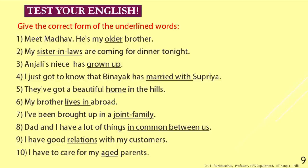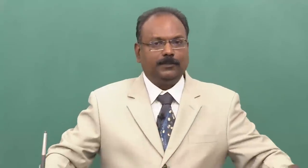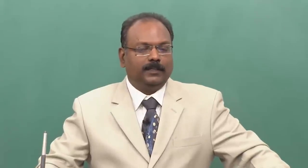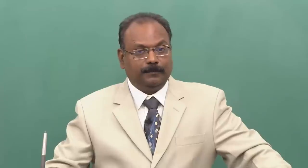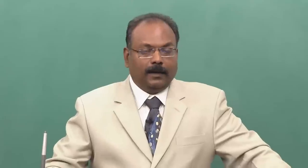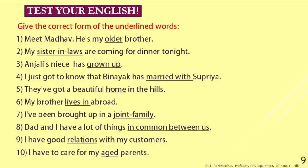Sentence 6: 'My brother lives in abroad.' A very common expression — 'lives in' — what is wrong? Sentence 7: 'I have been brought up in a joint family.' This is the most interesting one because some of you cannot think of another word other than 'joint family' — please look it up in a dictionary. Sentence 8: 'Dad and I have a lot of things in common between us.' What is wrong with 'in common between us'? Sentence 9: 'I have good relations with my customers.' Check the word 'relations'. Sentence 10: 'I have to care for my aged parents.' What is wrong with the use of 'aged'?